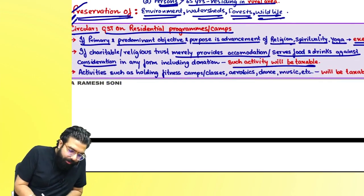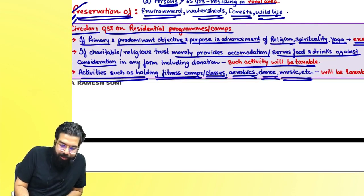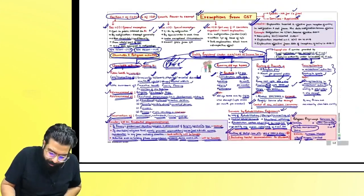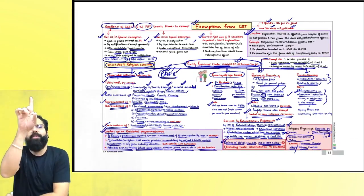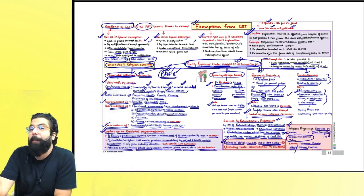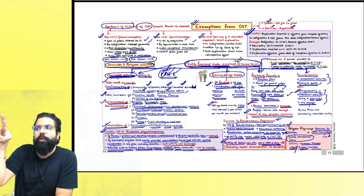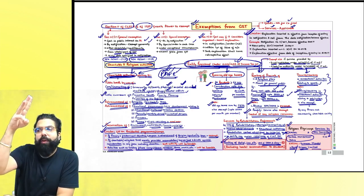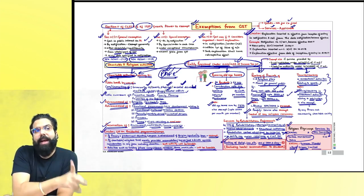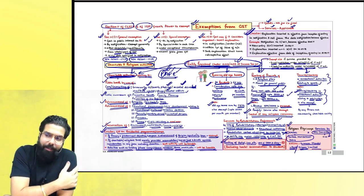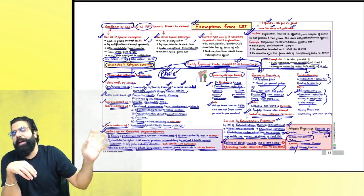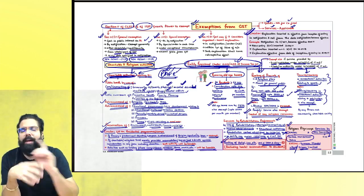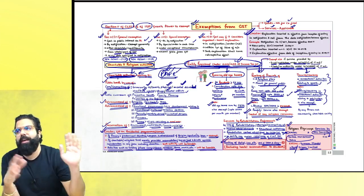Activities such as holding fitness camps, aerobics classes, dance classes, and music classes — the government never gave any exemption on these. All are always taxable. To summarize charitable activity exemptions: charitable institution registered under 12AA or AB doing PAPE activities is exempt; running an old age home up to Rs. 25,000 per month per member for residents aged 60+ is exempt; renting precincts at 9,999 per day/month is exempt; recreational activity relating to sports by 12AA/AB entity is exempt; rehabilitation professional services at qualifying establishments are exempt; KMVNL doing Kailash Mansarovar Yatra and Hajj Committee doing Hajj are exempt.